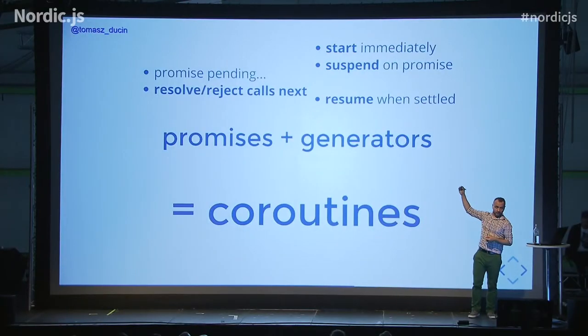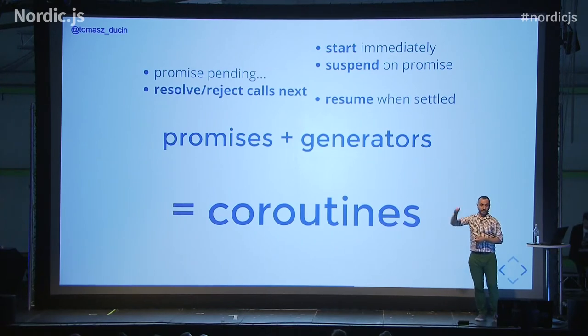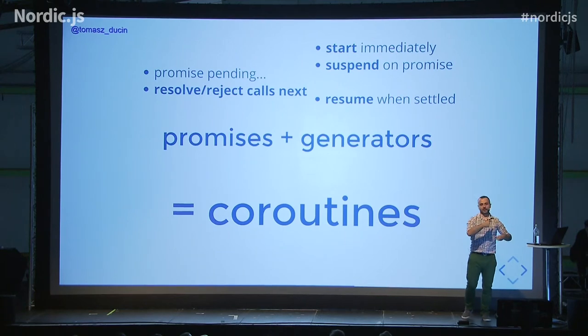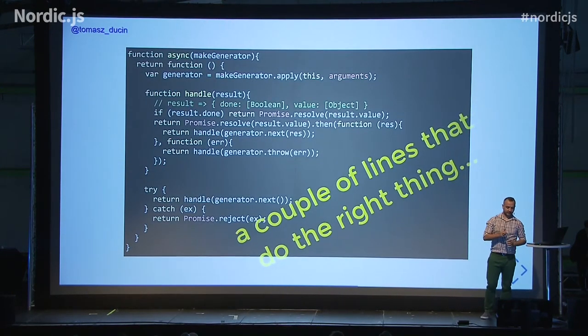A coroutine is based on promises and returns a promise, so it's greedy — it starts immediately. When we step upon a promise, we suspend the generator and wait while it's pending. When the promise resolves or rejects, we call next on the iterator to wake it up. There's a loop: call then on a promise, call next on the generator, then on the promise, next on the generator — a perpetuum mobile. We just need a small wrapper that makes native promises and coroutines work together — just a couple of lines. Let's call it async for short.